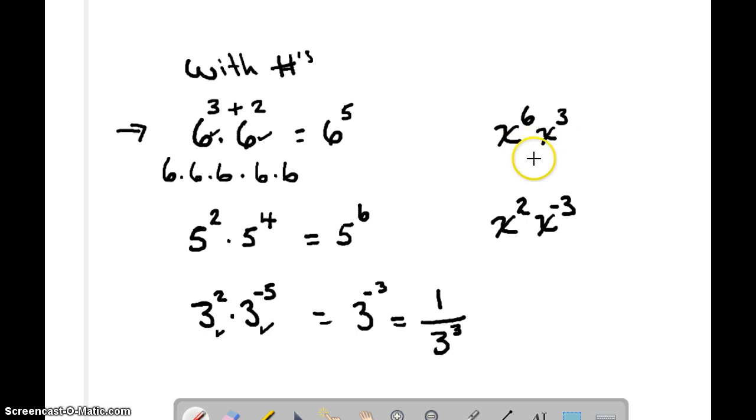Well, what happens if my base is a variable? Does anything change? Well, no. We have 6 x's here and we have 3 x's here all being multiplied together. We're just going to use the rule. Common base, 6 plus 3 is 9. Common base, 2 minus 3 is negative 1, 1 over x. Remember, we don't have to write that. So that's rule number 1.